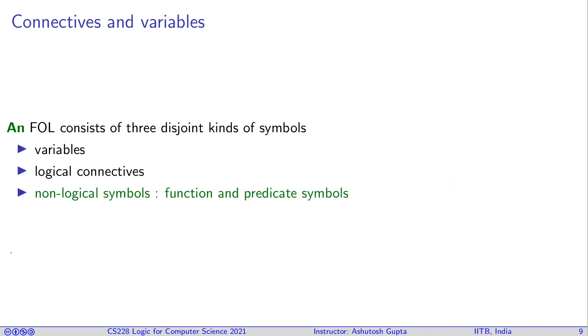First, you have three kinds of symbols. Remember that propositional logic had two kinds of symbols: propositional variables and logical connectives. Now we have three kinds of things: variables, logical connectives, and non-logical symbols which are called function or predicate symbols.